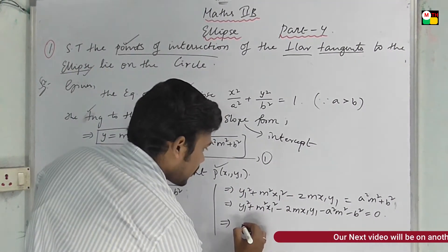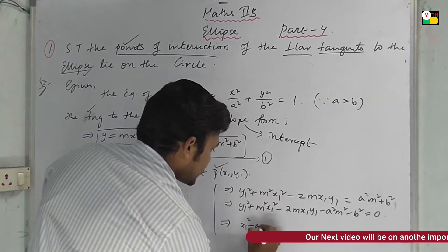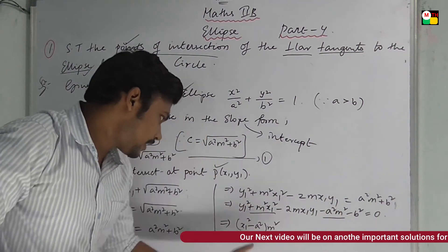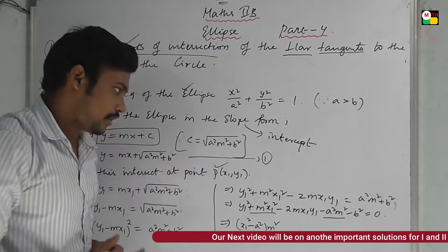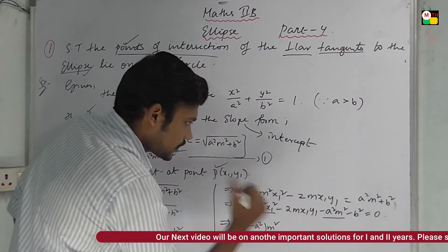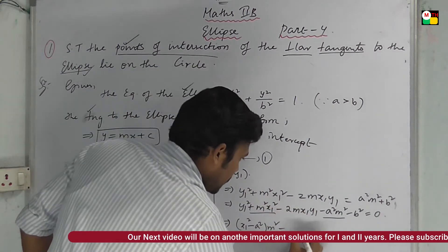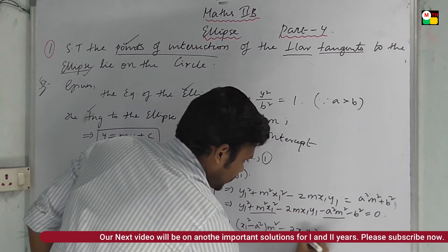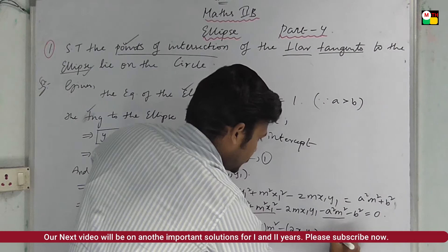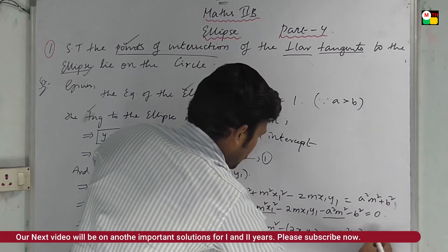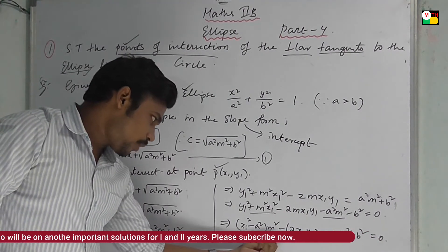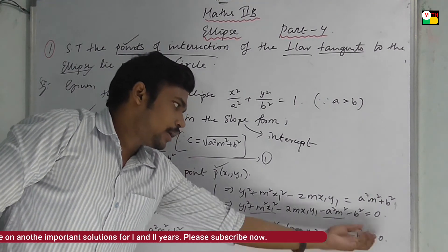Taking m squared common: m squared times (x1 squared minus a squared) minus 2x1y1 times m plus (y1 squared minus b squared) equal to 0. This is in the form of ax squared plus bx plus c equal to 0, a quadratic equation. So m is treated as the variable, and this quadratic equation has two roots.